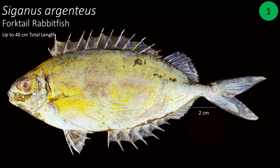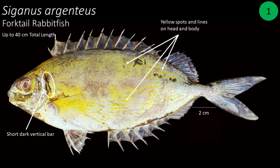Number 1: Siganus argenteus, also called fork-tail rabbitfish. It can grow up to 40 centimeters in total length. This species has a short dark vertical bar on the upper margin of the gill cover. You can find numerous small yellow spots and lines on the head and body, and the caudal fin is forked.